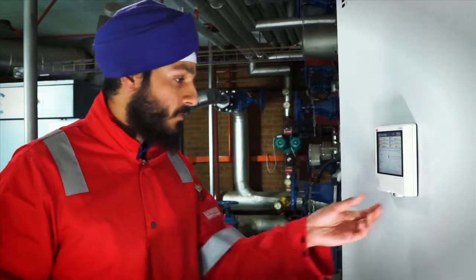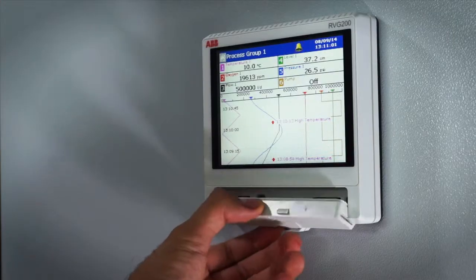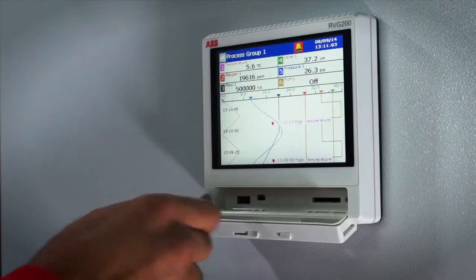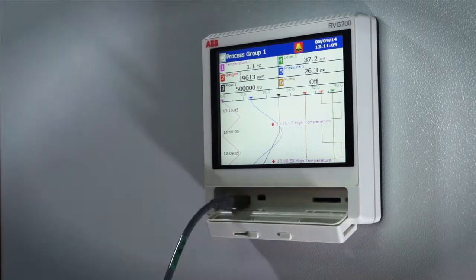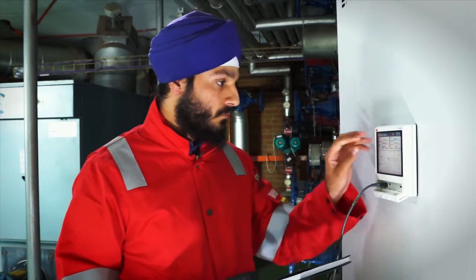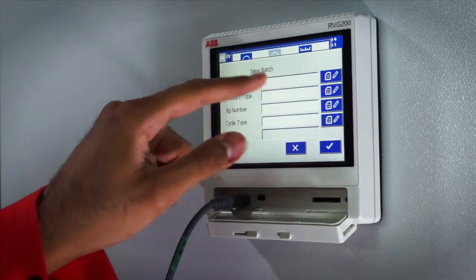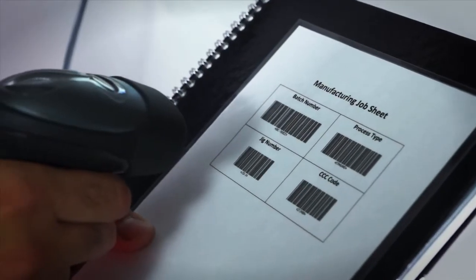Operation is further simplified by the inclusion of a USB port on the front and rear that can support peripheral devices such as a keyboard or USB barcode scanner for fast entry of text information such as batch numbers and messages.